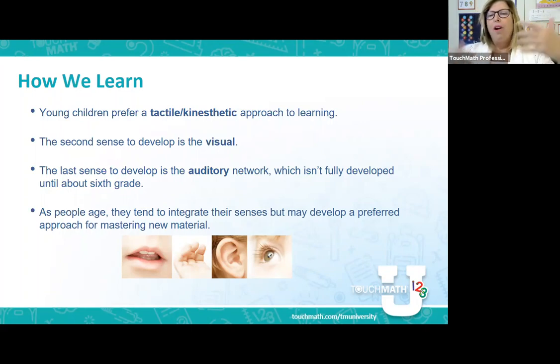What we know is, on average, typical kids without any kind of disabilities don't fully integrate that auditory network until about sixth grade. As we get older, as things integrate, we may be developing those preferences. I always say I'm a notoric learner. If you want me to memorize something, then I'm going to write it and write it and rewrite it and write it again. That's how I'm going to learn it. That's my preference. But I am also touching, seeing, hearing. And so all of those things are important as we're moving forward.